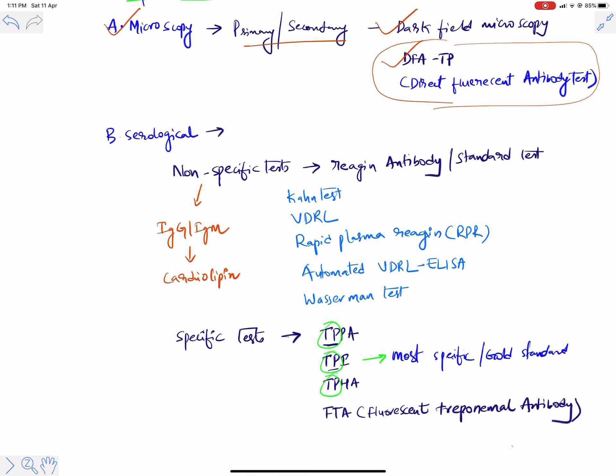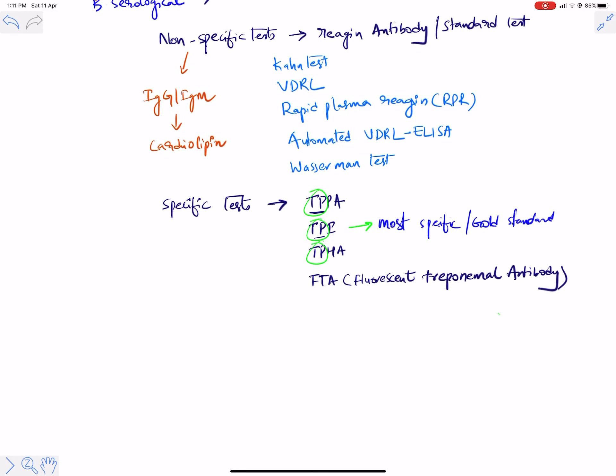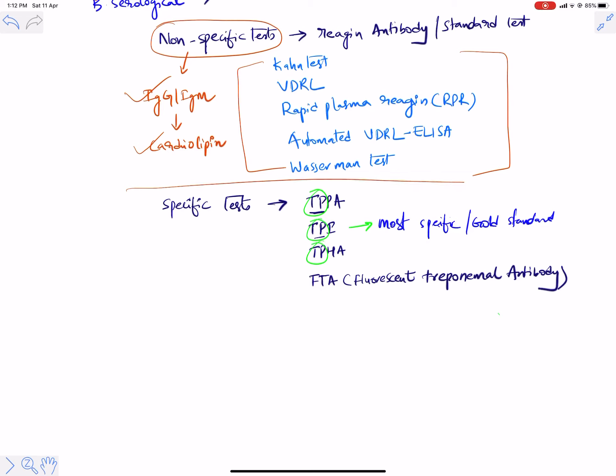Serological tests are blood-based. Non-specific tests are concerned with IgG and IgM production initiated by reagin antibody — cardiolipin. These are also called standard tests. Examples of non-specific tests include VDRL and RPR. These tests do not specifically identify the organism but detect antibody changes in the body — they are non-specific.